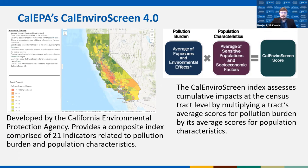The popularity and usefulness of this environmental justice screening method has led state after state to develop their own tools following California's example — states like Washington, Colorado, and Michigan have developed their own environmental justice mapping and screening tools measuring cumulative impacts, each using a mix of state-specific and national data sets. With this precedent in mind, we set out to create a national-level composite spatial index to measure cumulative impacts by adapting the environmental justice screening method.